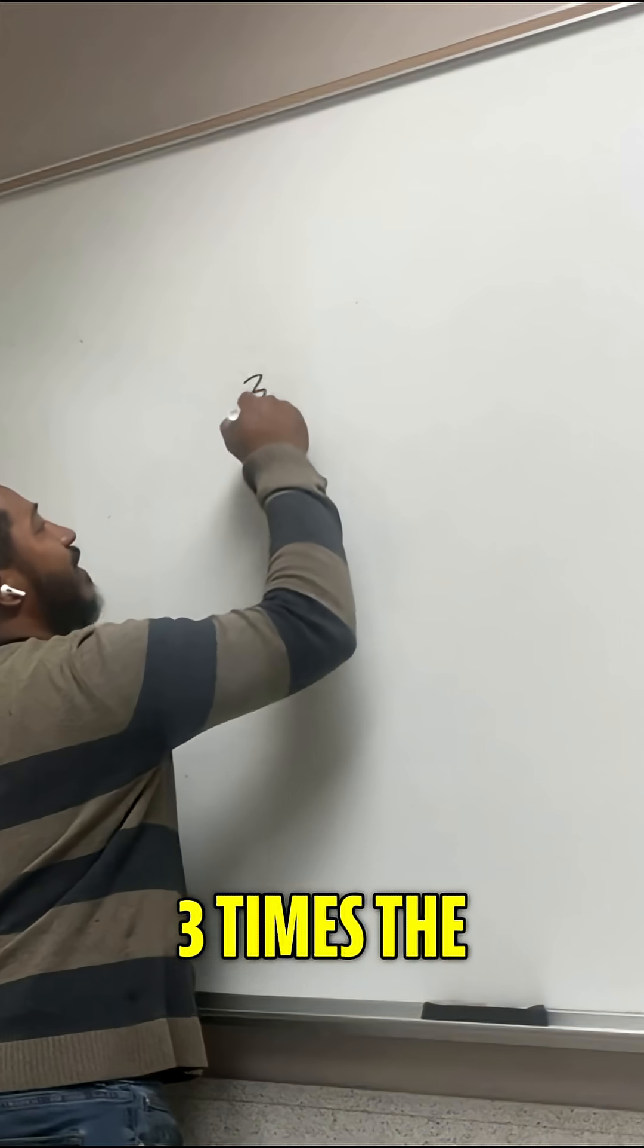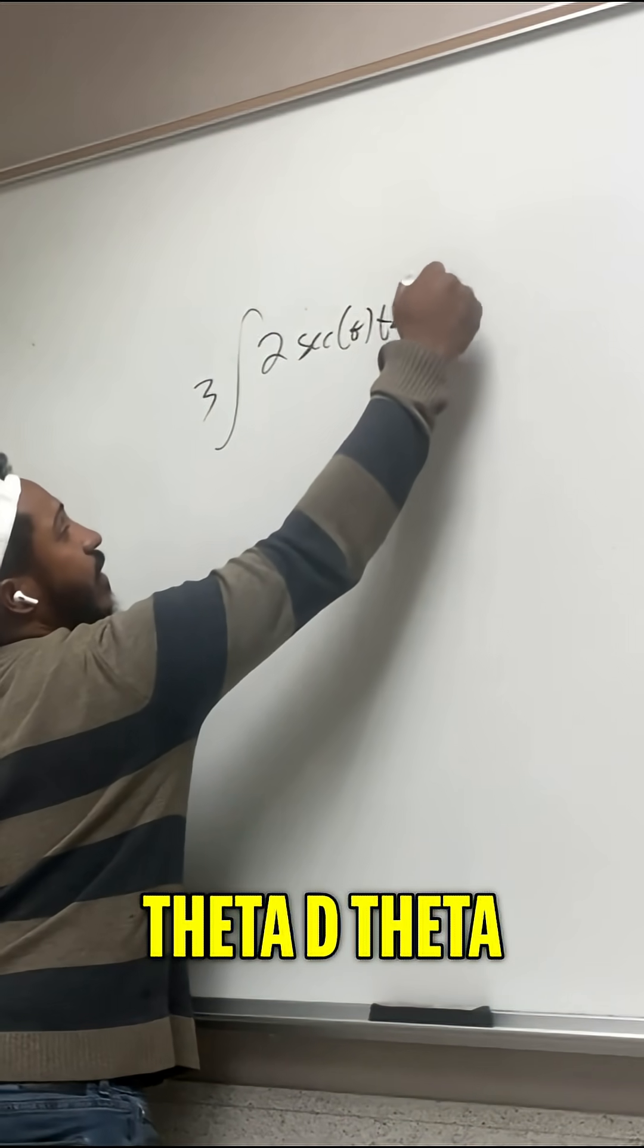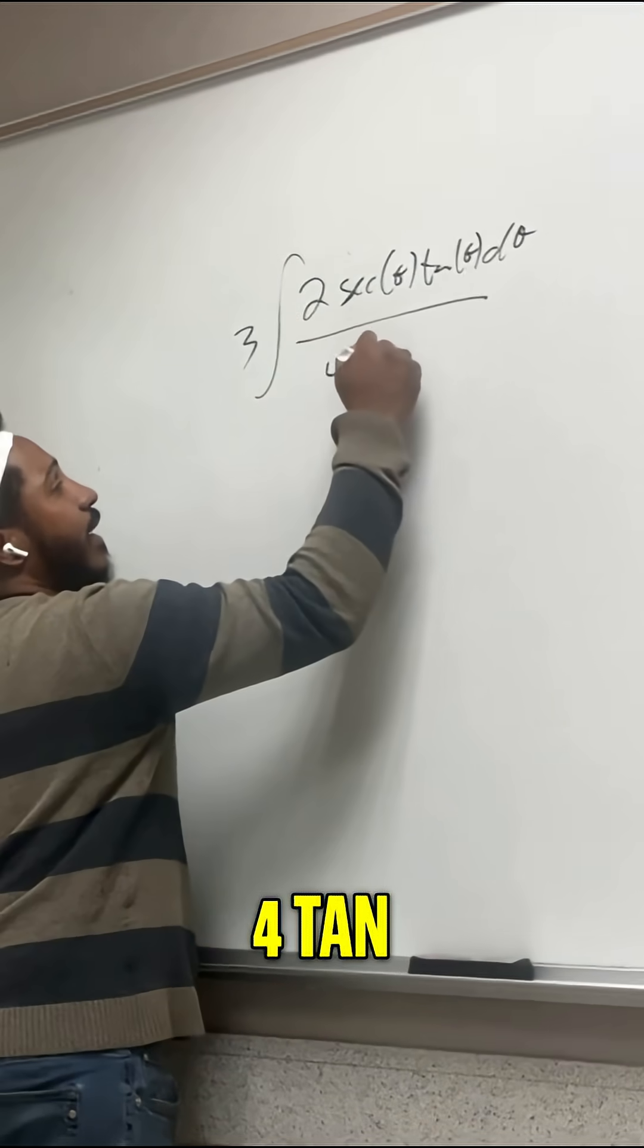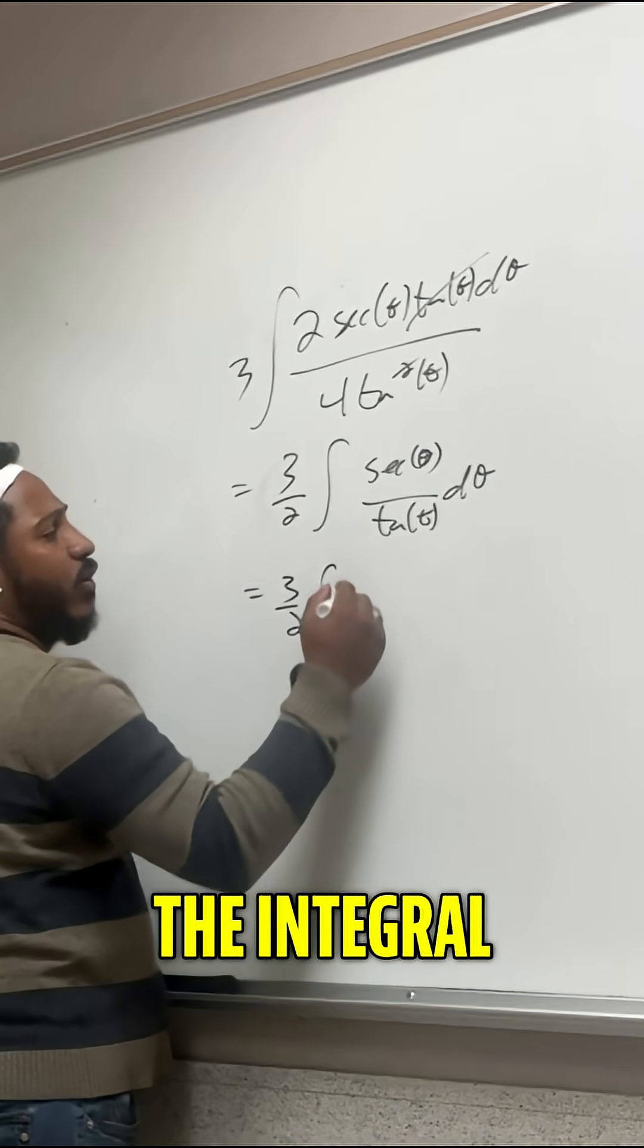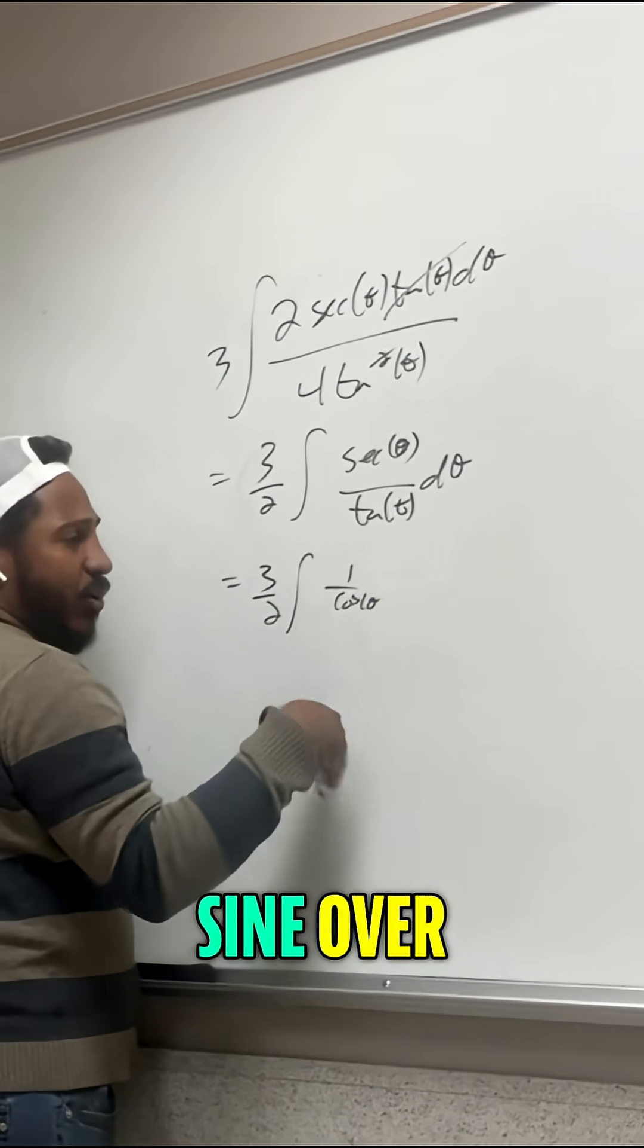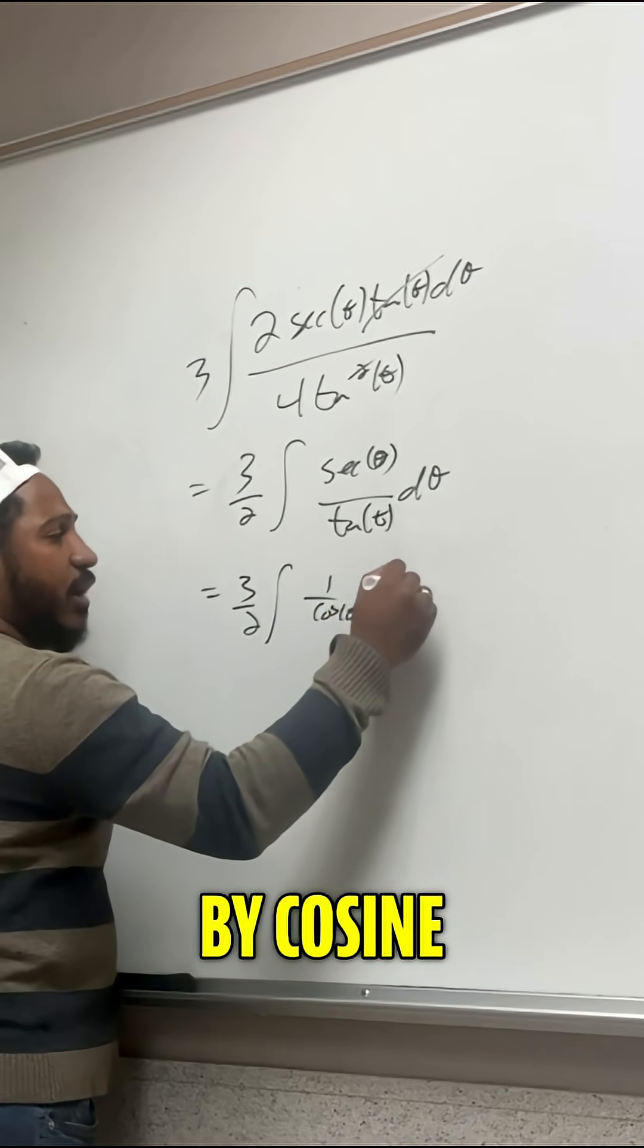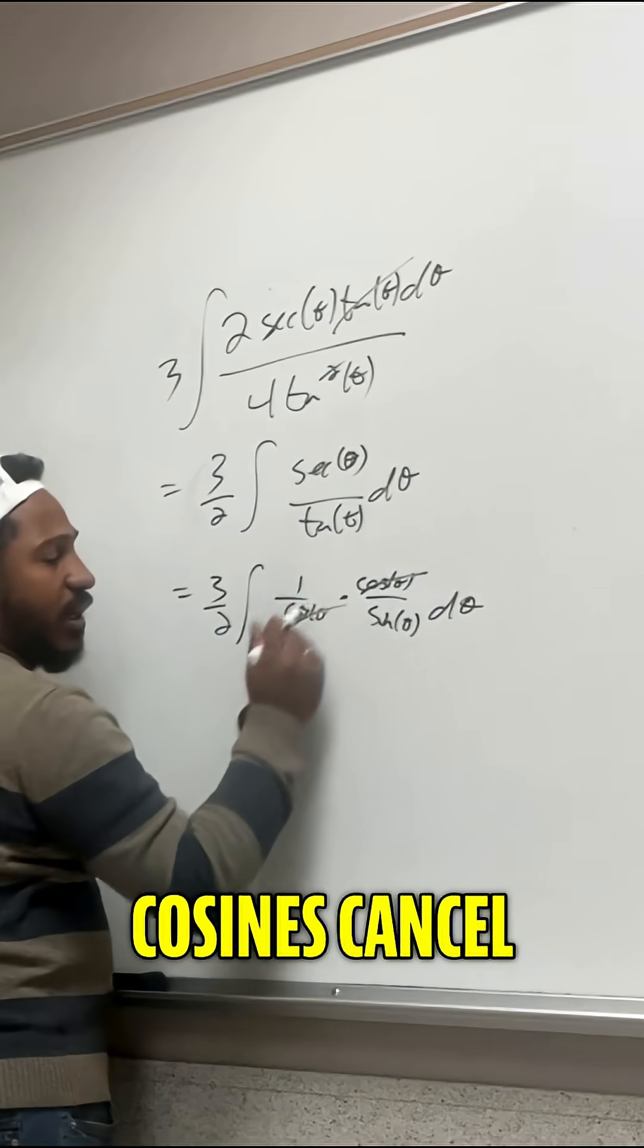this becomes 3 times the integral of 2 sec of theta tangent of theta d theta over 4 tan squared of theta. Well, then a tangent of theta cancels. 3 halves times the integral of 1 over cosine of theta. And then divided by sine over cosine, we're multiplying by cosine of theta over sine of theta d theta. Well, now the cosines cancel.